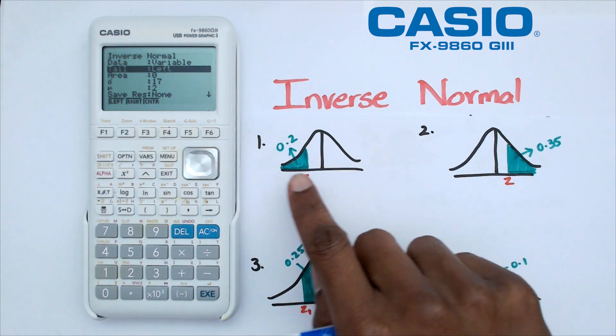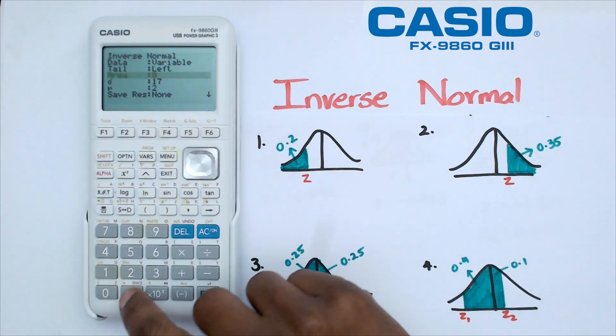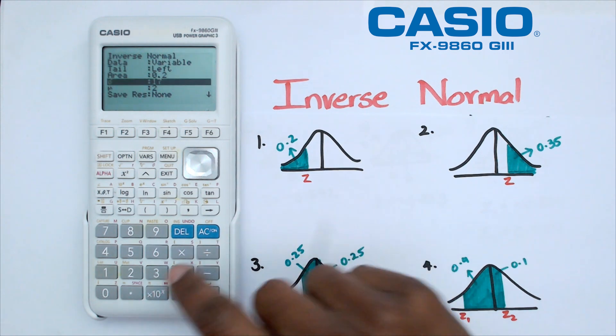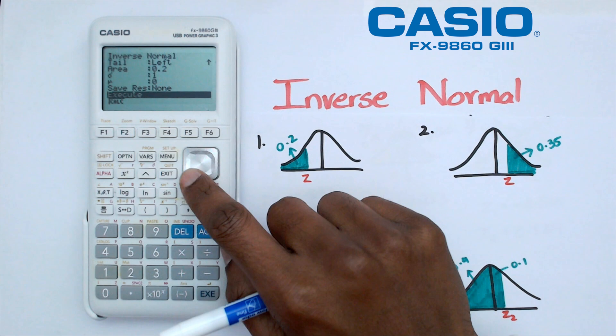Go to tail and we're going to go with left because the area is on the left side of the curve. We're going to put area as 0.2. Standard deviation is going to be 1 and our mean is going to be 0.